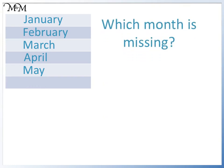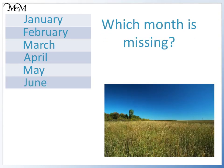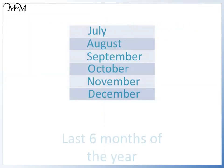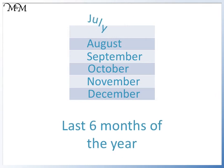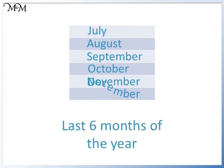Which month is missing? It's June, the last of the first six months. After June, we have the next six months. This is the second half of the year, starting with July and ending in December.